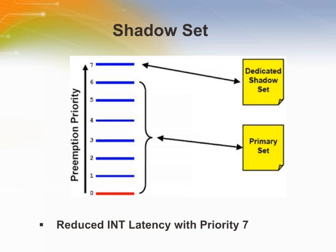The priority 7 vectors also get a dedicated shadow register set. In normal operation, when the CPU is executing at priority 6 or lower, the CPU operates on a primary register set. But when a priority 7 interrupt occurs, the interrupt controller automatically switches to the shadow set and jumps to the appropriate vector. With the dedicated shadow set, the priority 7 interrupt offers faster interrupt response compared to other priority interrupts. When the priority 7 interrupt occurs, the application does not have to save the entire register set context. When the priority 7 interrupt handler finishes its task, the application does not have to restore the full context either — it only needs to perform a few steps and immediately return to the previous execution state.